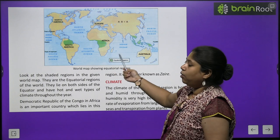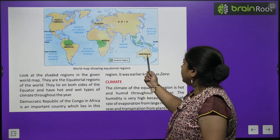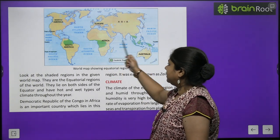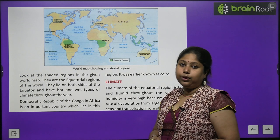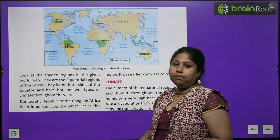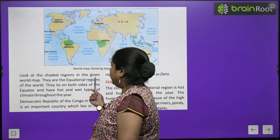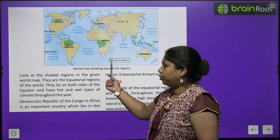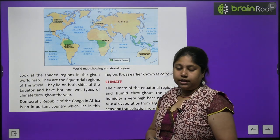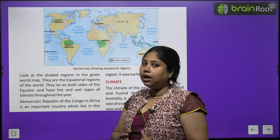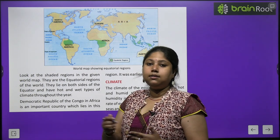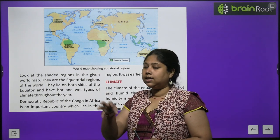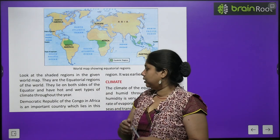This is the map of the world. As you can see, the areas marked in green are equatorial regions. Look at the shaded regions given in the world map — they all are equatorial regions of the world. They lie on both sides of the equator, meaning some lie in the northern hemisphere and some in the southern hemisphere. Partially they are lying in both hemispheres — a little on each side, north and south.